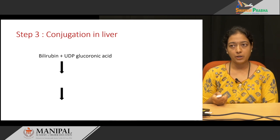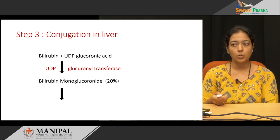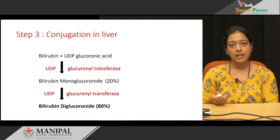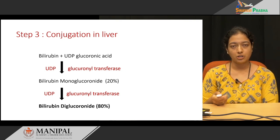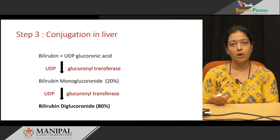In the liver, the hepatocytes play an important role in the conjugation process. Bilirubin reacts with UDP glucuronic acid in the presence of the enzyme glucuronyl transferase; UDP is released and bilirubin monoglucuronide is formed. In the blood, around 20% of bilirubin is in bilirubin monoglucuronide form. The same reaction continues and finally bilirubin diglucuronide is formed, which constitutes 80% in the blood. This completes the conjugation of bilirubin.